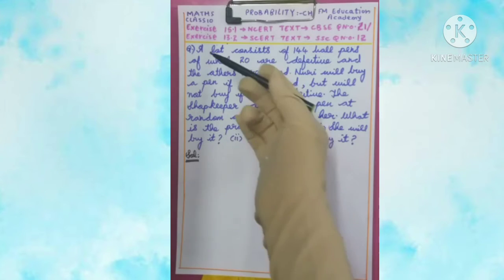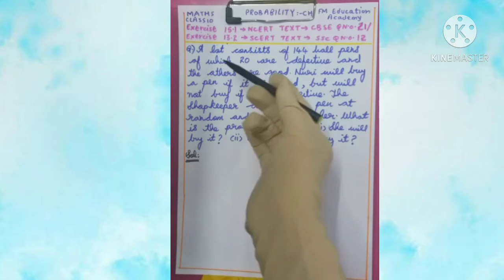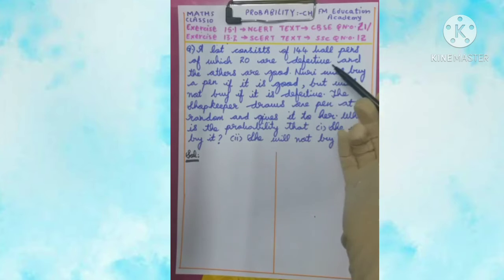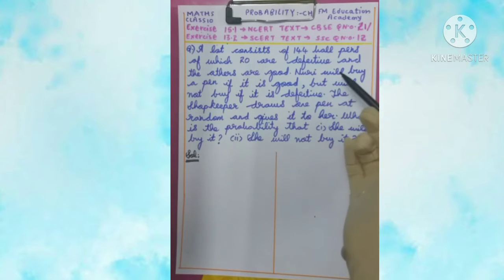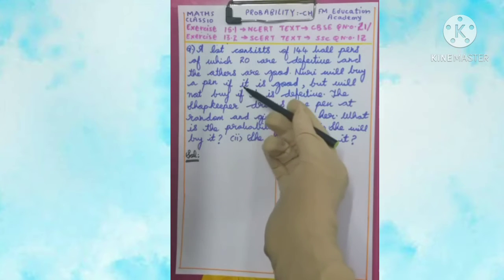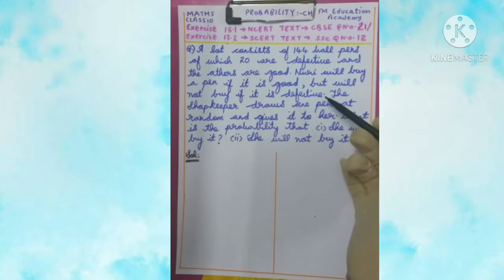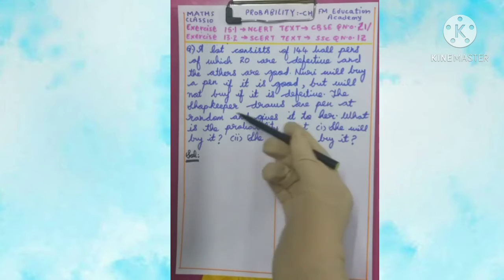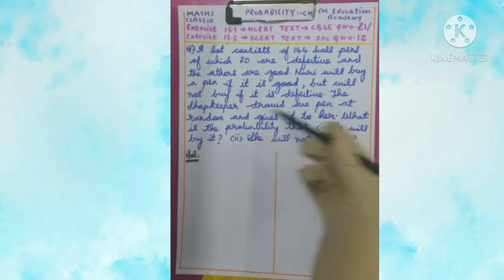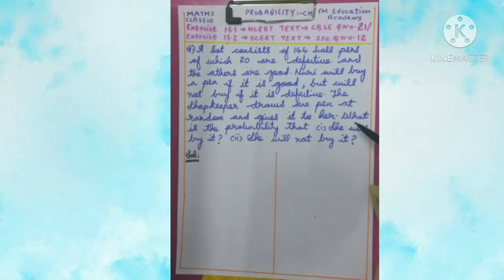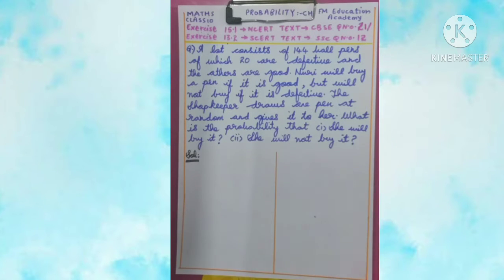The first question is: a lot consists of 144 ball pens of which 20 are defective and the others are good. Noori will buy a pen if it is good but will not buy if it is defective. The shopkeeper draws one pen at random and gives it to her. What is the probability that: number one, she will buy it, and number two, she will not buy it?